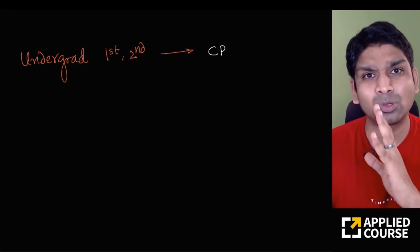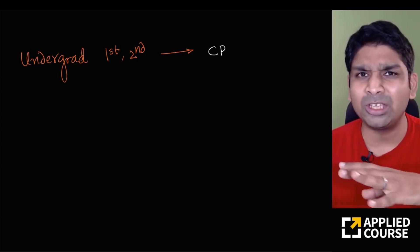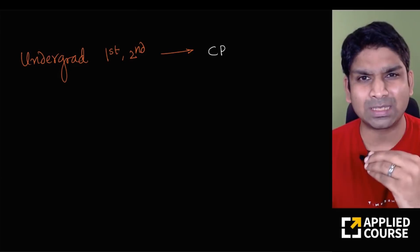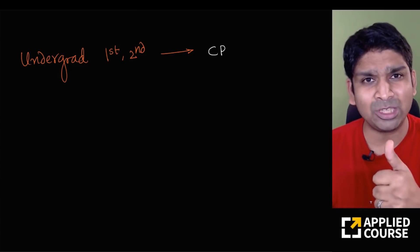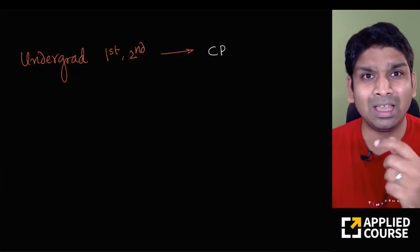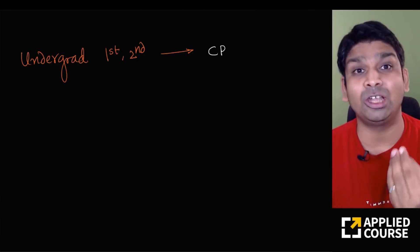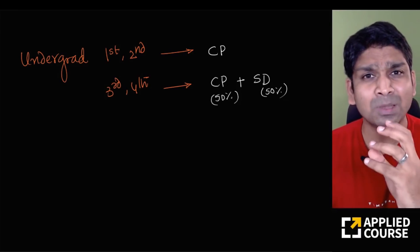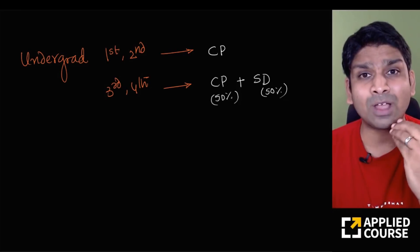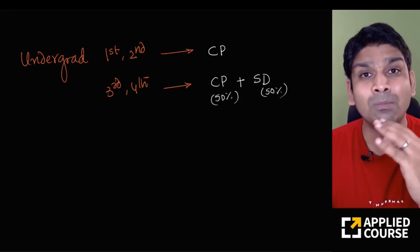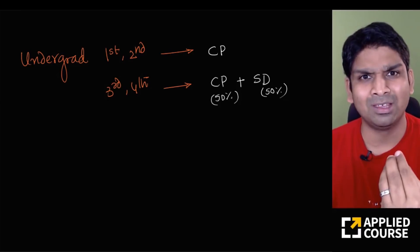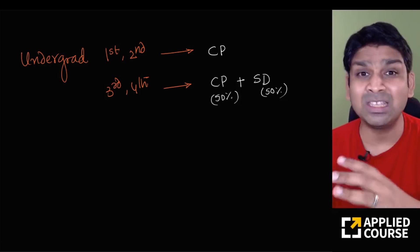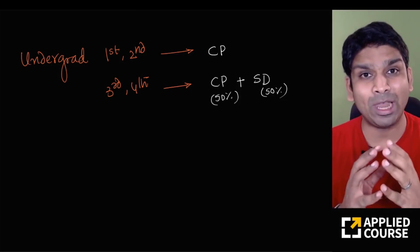So what should you focus on? Here is a simple rule of thumb. If you're an undergraduate student in your first and second year — whether engineering, BSc, or BCom — focus on picking up one major programming language, become good at data structures and algorithms, and participate in competitive programming to build that foundational knowledge. In your third and fourth year of a four-year undergraduate program, spend 50% of your time on competitive programming and 50% building useful software — your final year project, course projects, or something tangible.